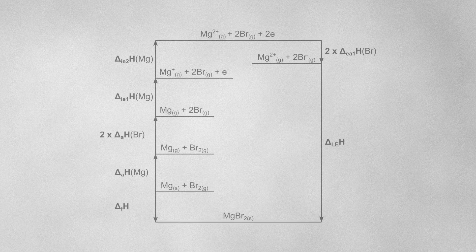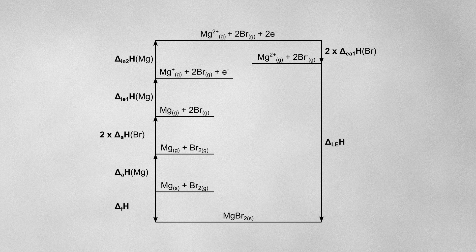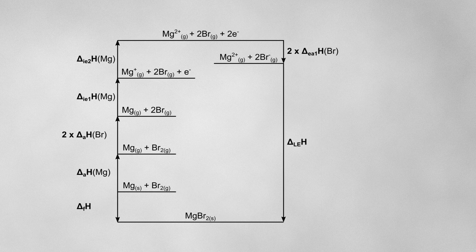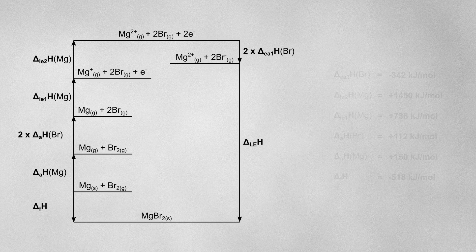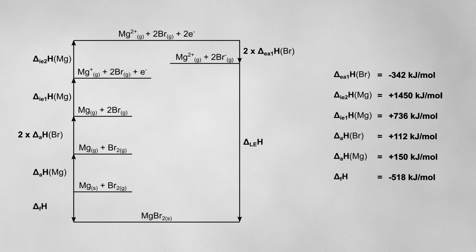Let's take a look at one last example, which is slightly trickier than the others and is the type of Born-Haber cycle where people usually make mistakes. This is the Born-Haber cycle for magnesium bromide. By now you should hopefully understand how this was set up. Using given values of enthalpy changes, I can assign values to the arrows.